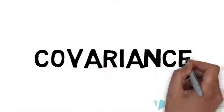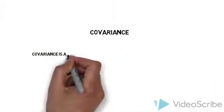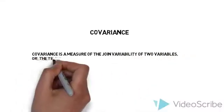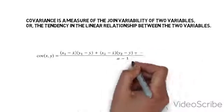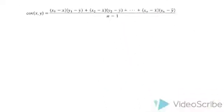First of all, covariance is a measure of the joint variability, or dependence, between two variables, and can be measured by this equation, which is a measure of the average product of deviations away from the means.